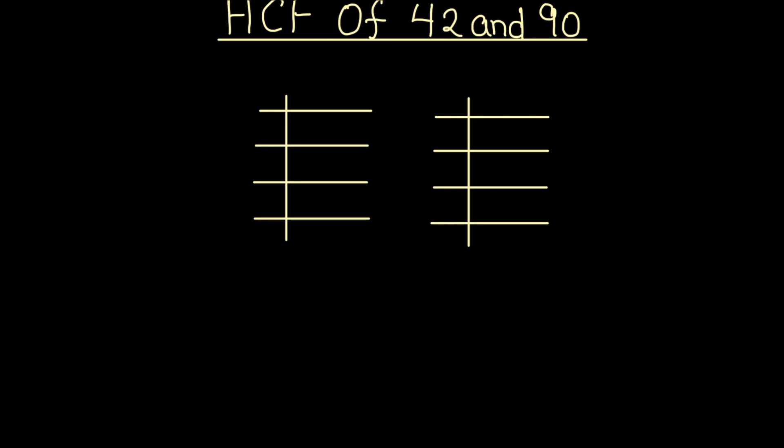For finding the HCF of these two numbers, we are going to find the factors using prime factorization. In prime factorization, we divide numbers using prime numbers and find their prime factors. So let's divide 42 and 90 separately and find their prime factors.